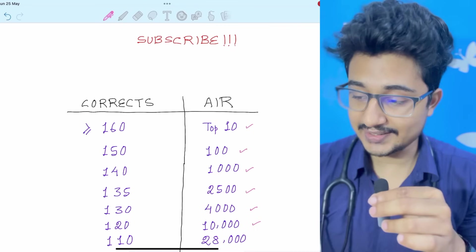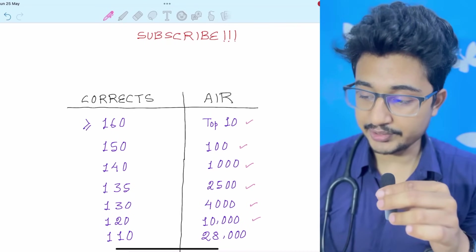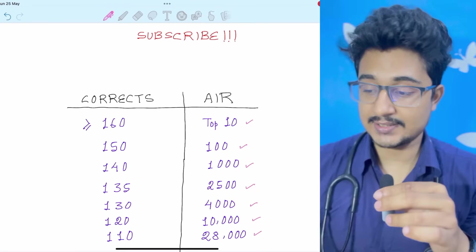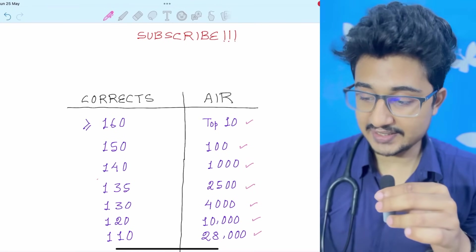See where the stagnation occurred, just after 140 to 110. 110 it is 28,000. See how the stagnation occurs.